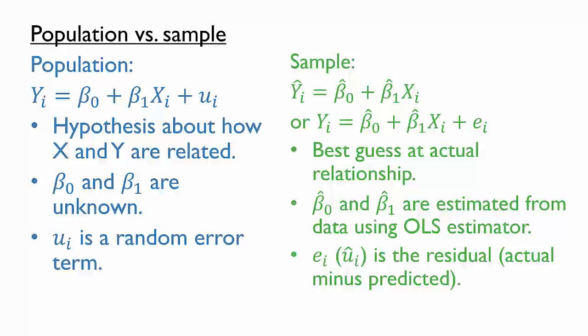They are similar to the population model's error terms, except that we never know the actual error terms, only our best guesses of those errors, the residuals. Since the residuals are estimated values of the errors, we sometimes call them û, with the hat again denoting a prediction.